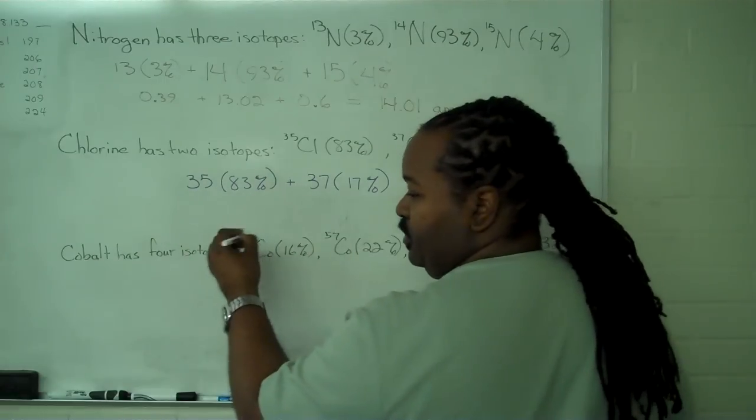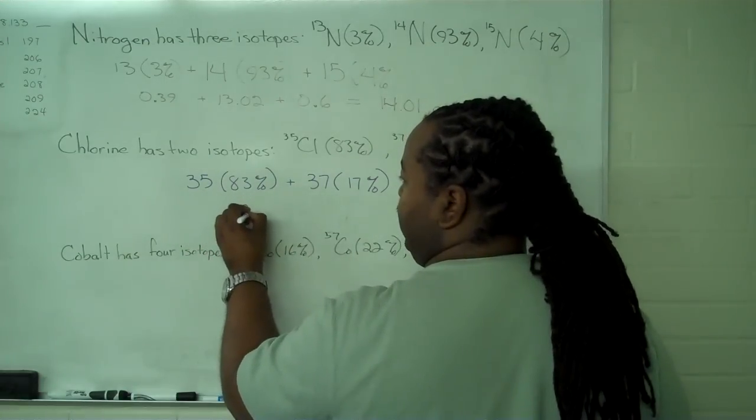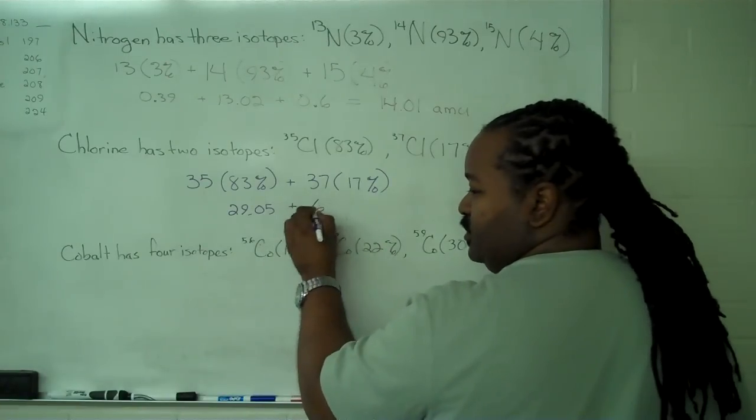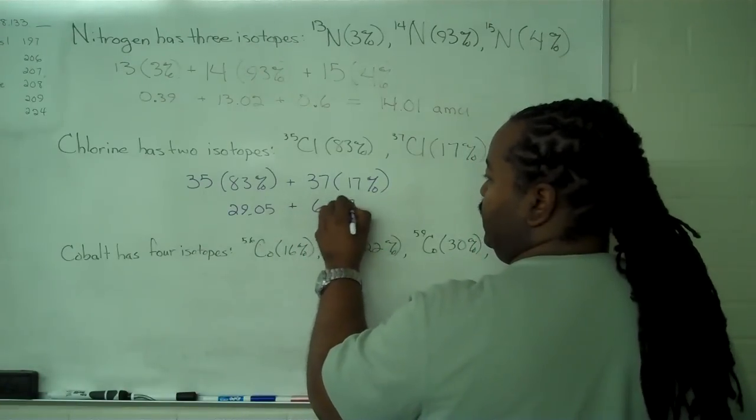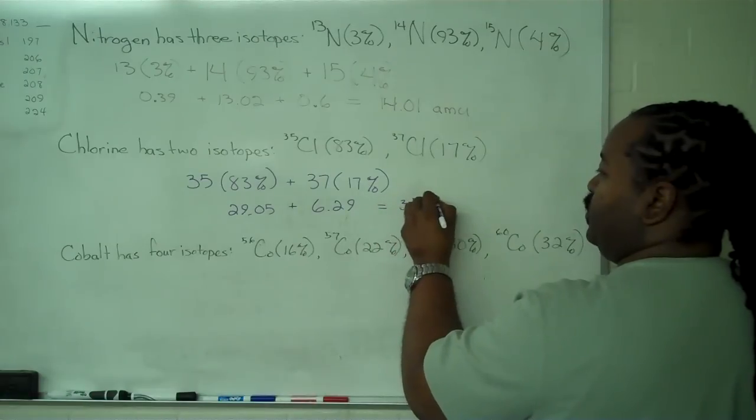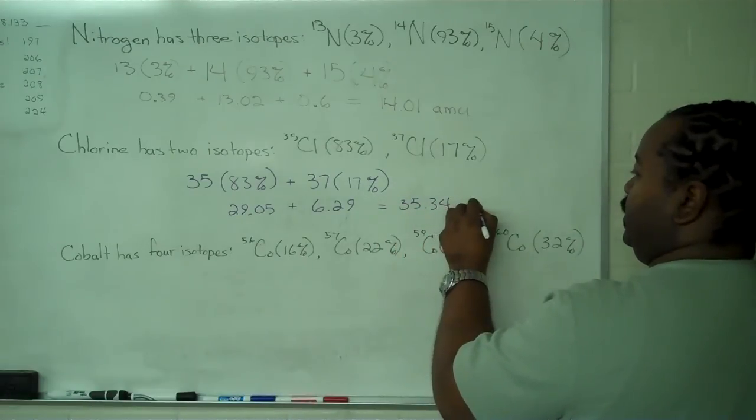The contribution from chlorine 35 to the overall mass is 29.05. For chlorine 37, we get 6.29. So this gives us 35.34 amu.